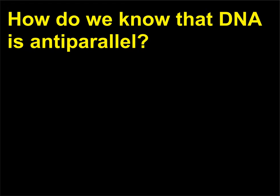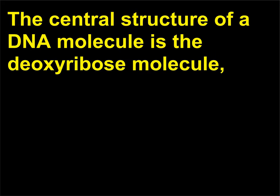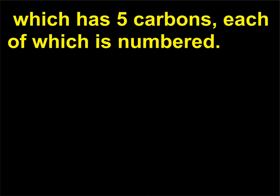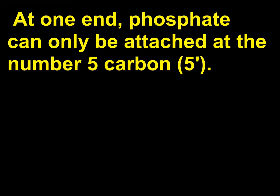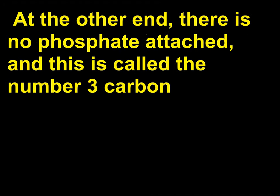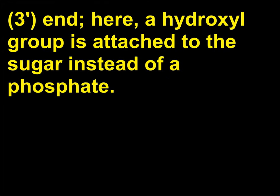How do we know that DNA is antiparallel? The central structure of a DNA molecule is the deoxyribose molecule, which has 5 carbons, each of which is numbered. At one end, phosphate can only be attached at the number 5 carbon. At the other end, there is no phosphate attached; this is called the number 3 carbon, and here a hydroxyl group is attached to the sugar instead of a phosphate.